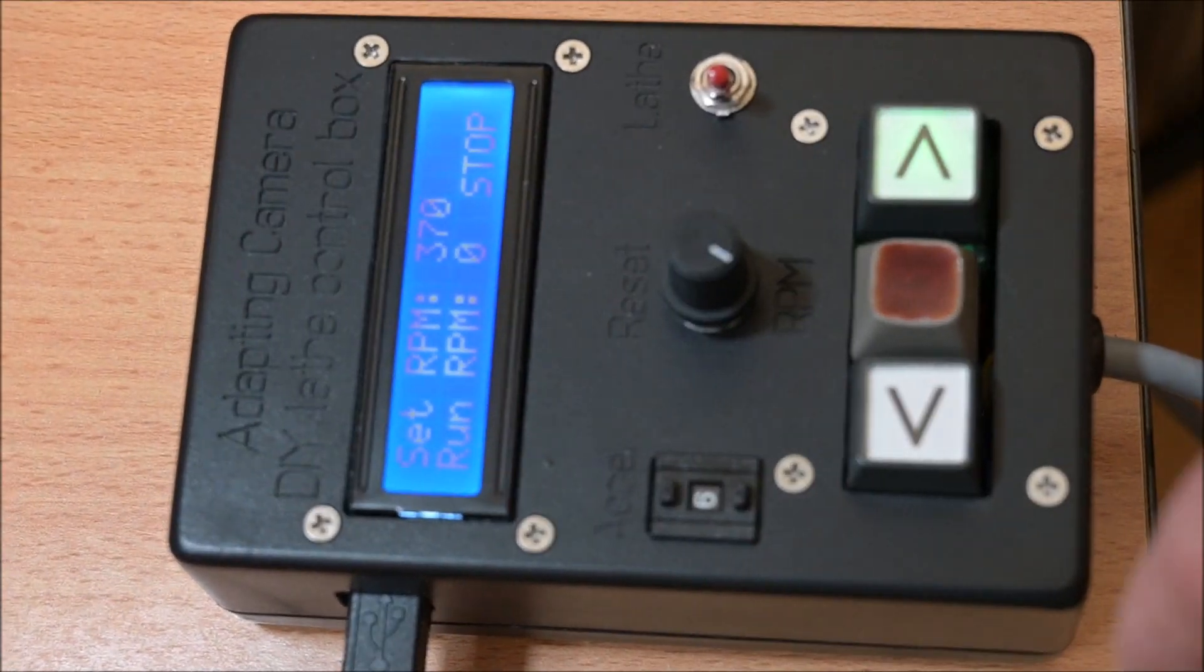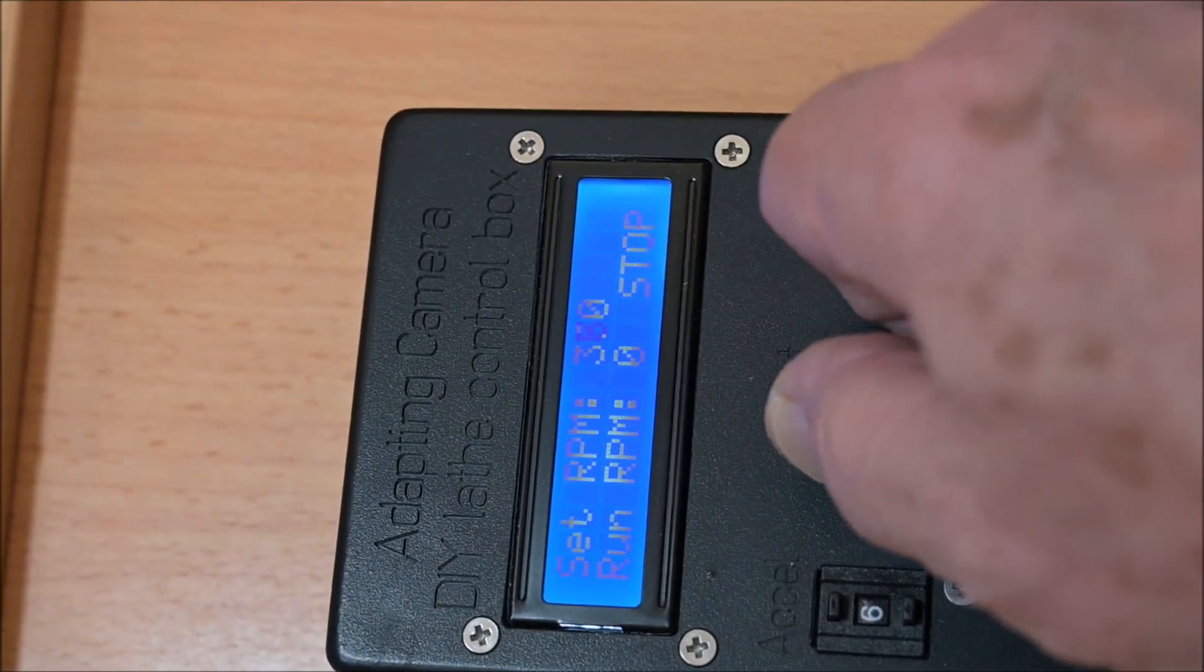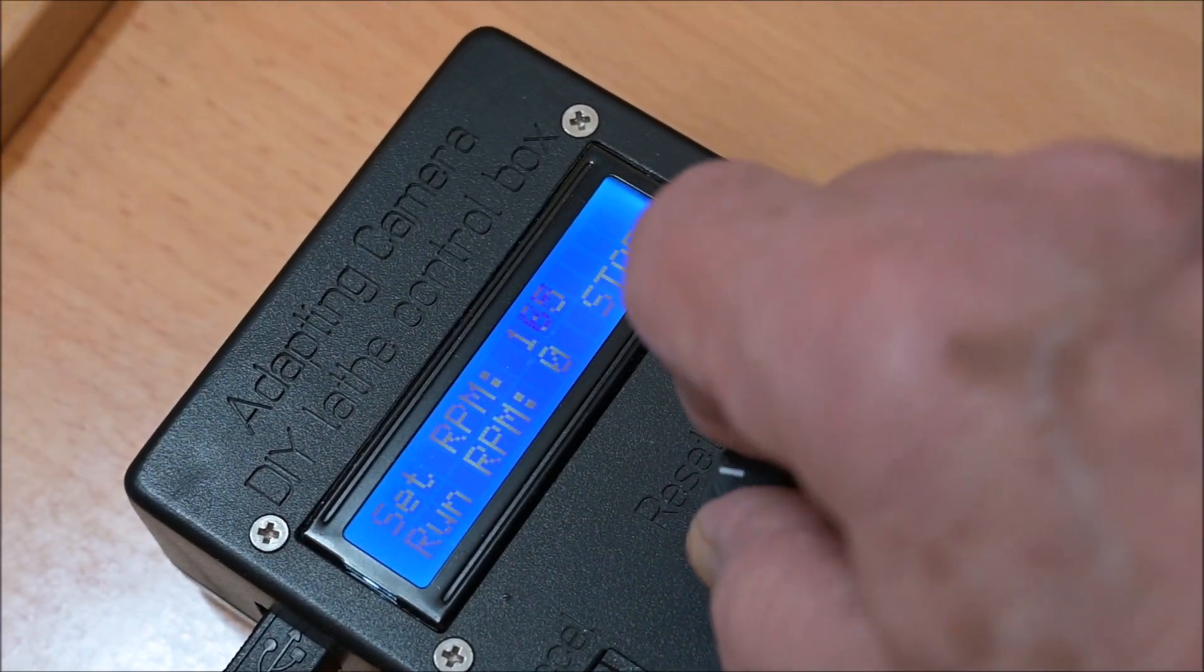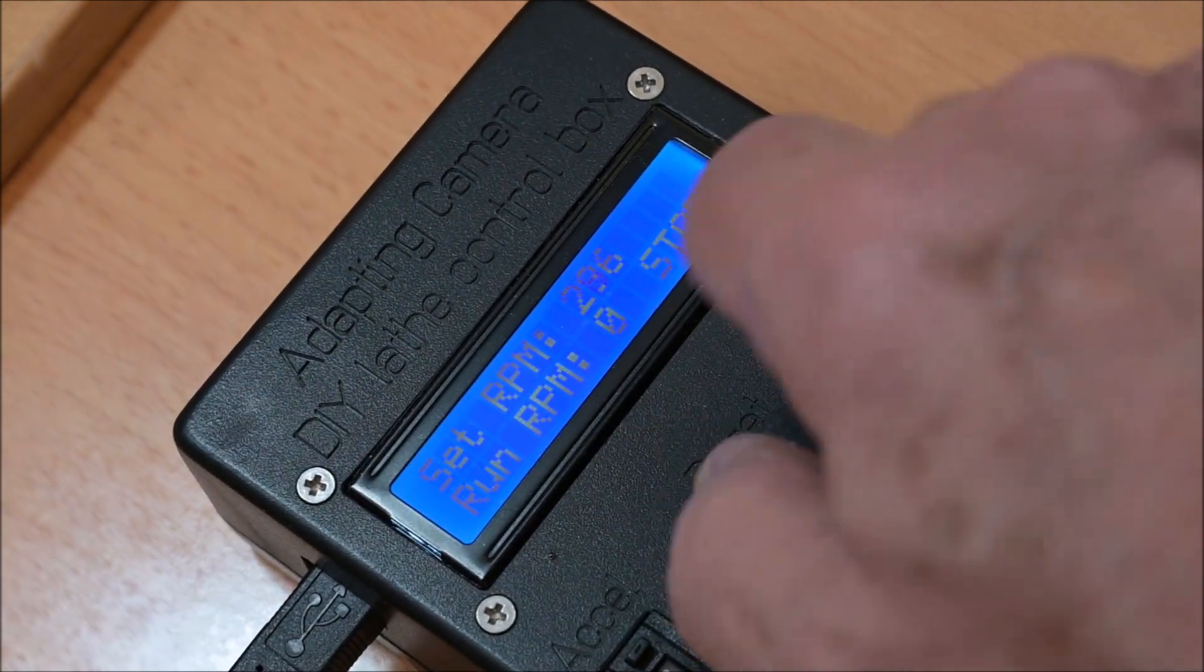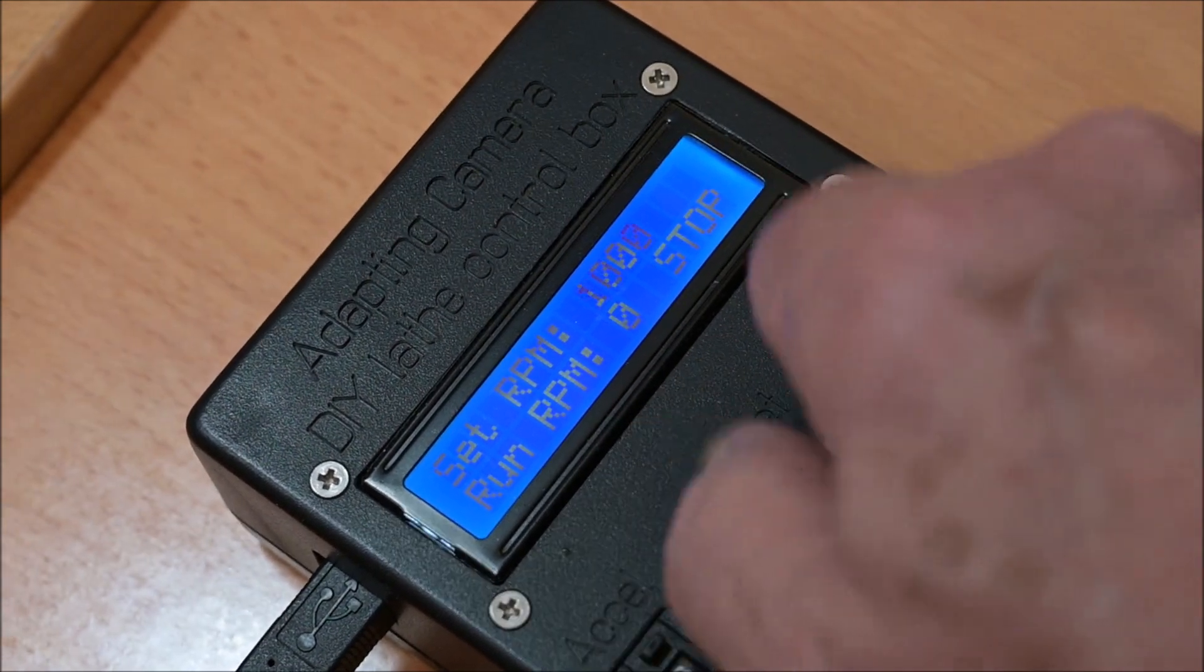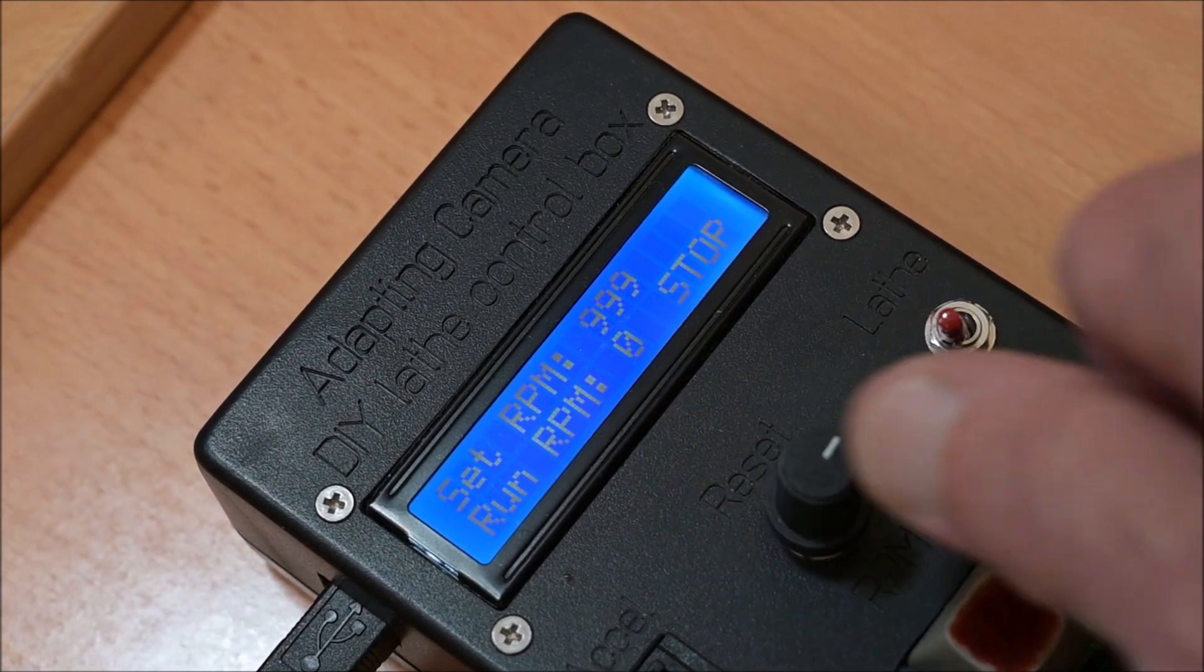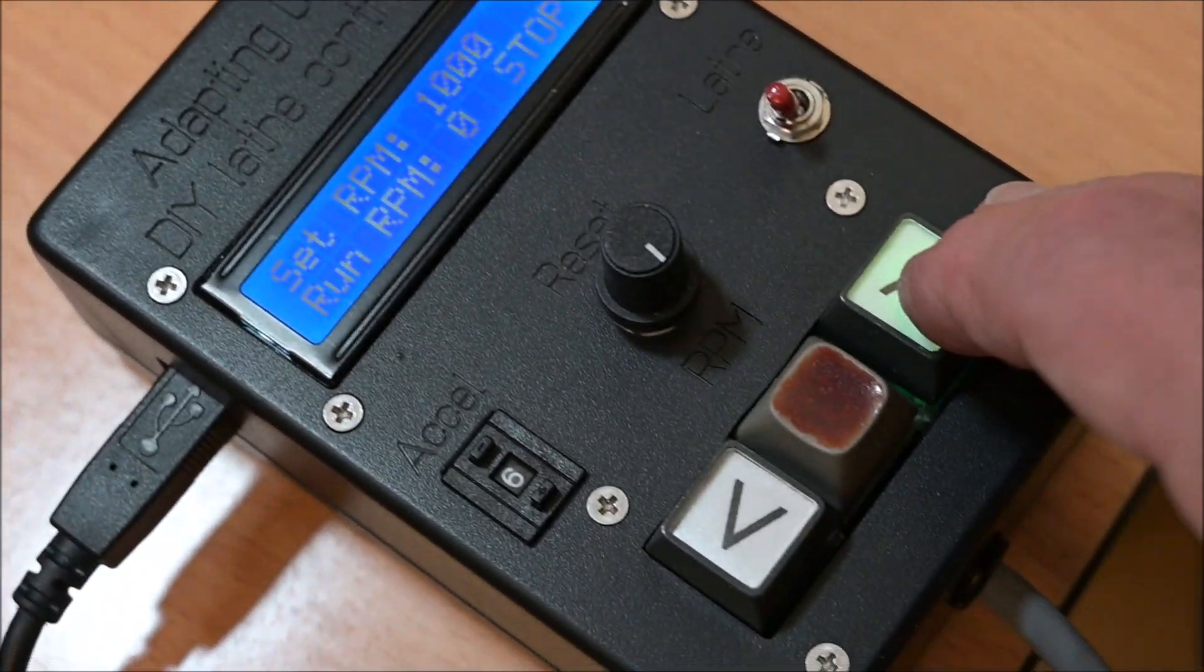The control box is still the same. I can adjust the chuck RPM between 0 and 1000 RPM, start and stop the spindle in clockwise or anti-clockwise direction, or I can control the spindle from the CNC. So basically there is no change in that, but I just want to show you in case you haven't seen my previous video yet.